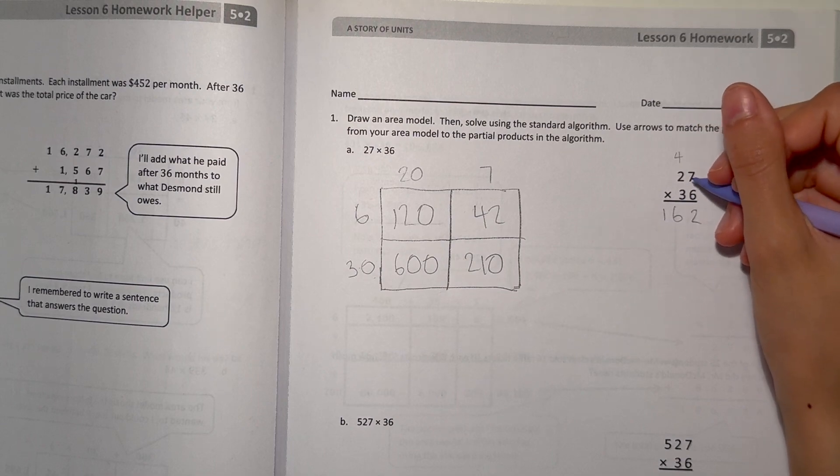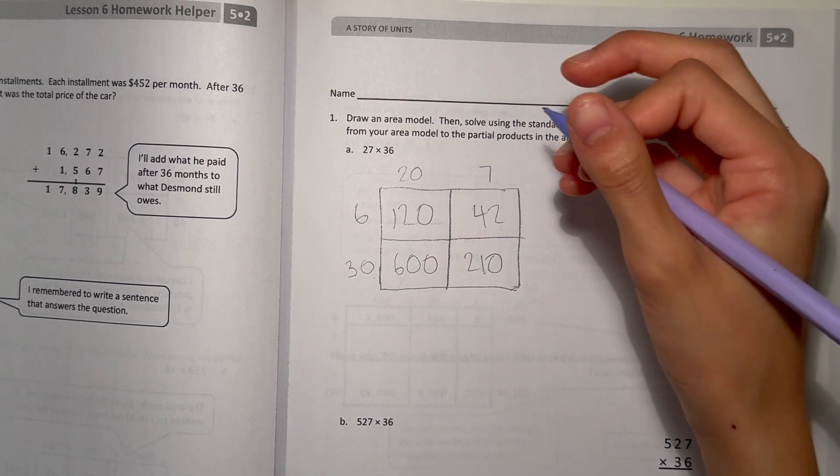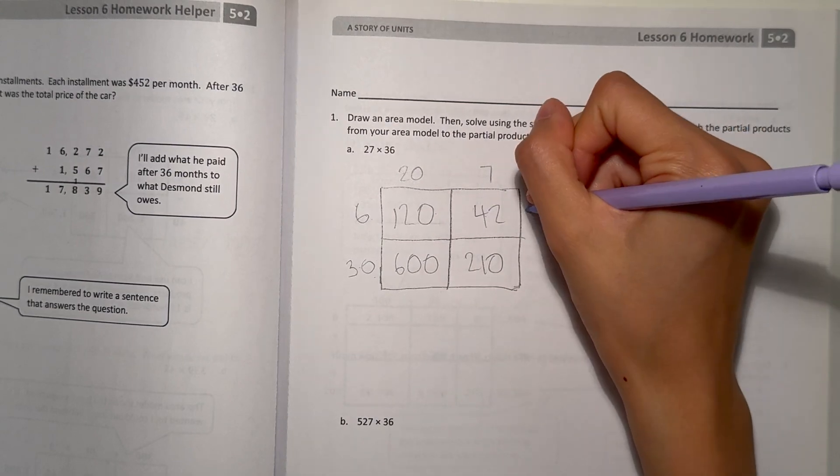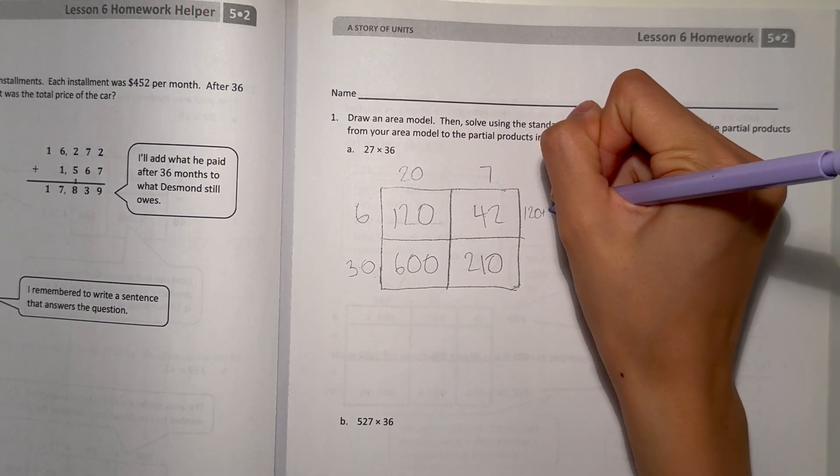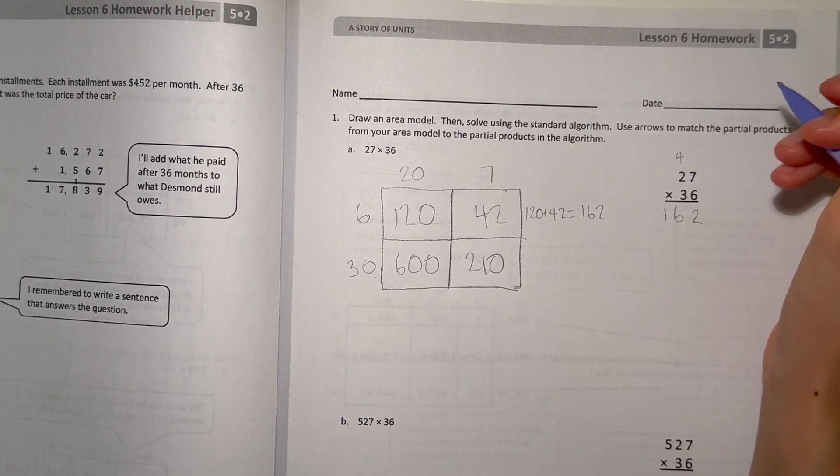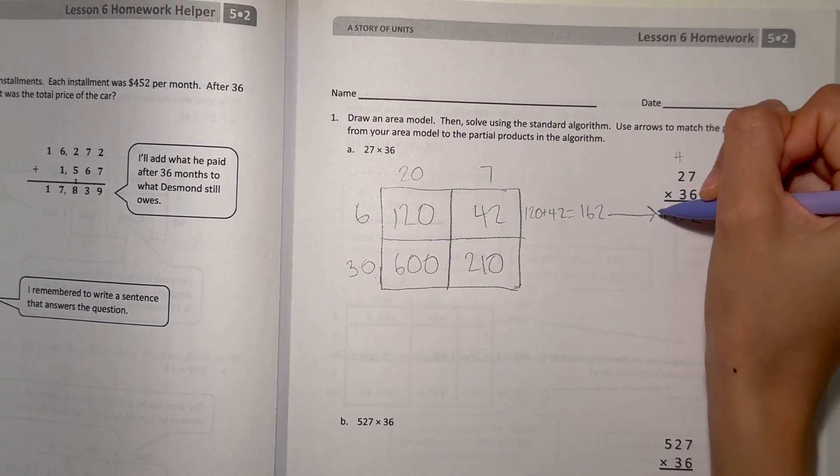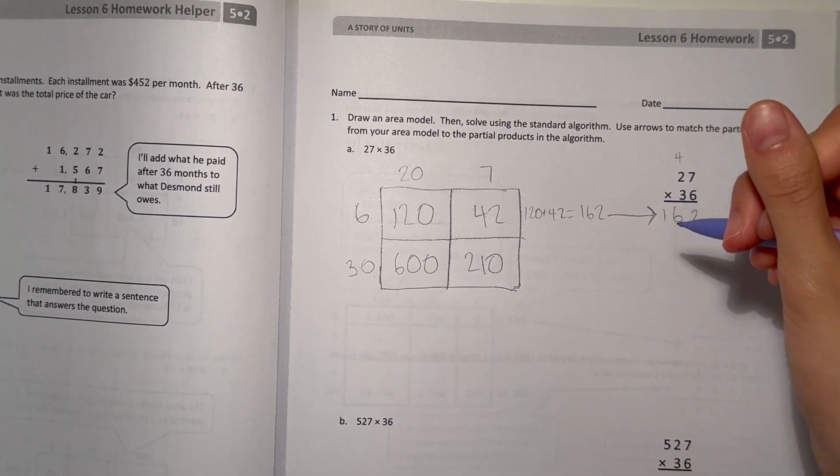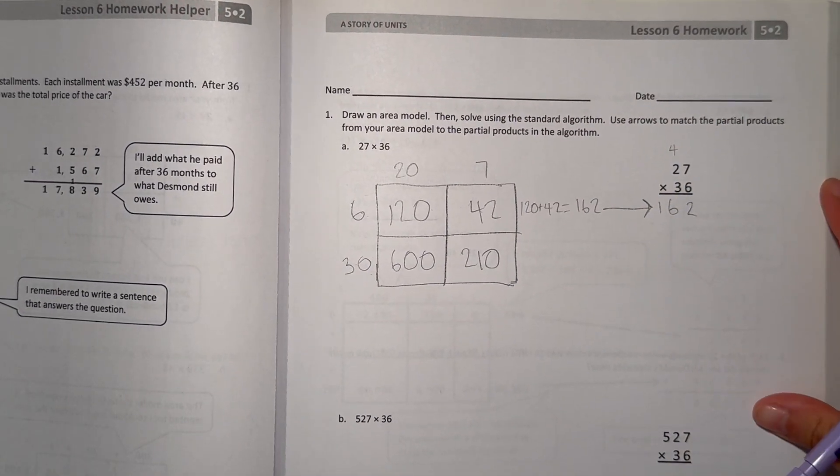Alright, so if you look at our area model, we have 120 and 42. Now we add those together. 120 plus 42 is 162. And this matches the number over here on our standard algorithm. So that's what we did with our area model.